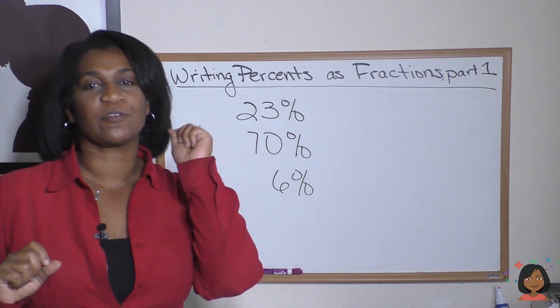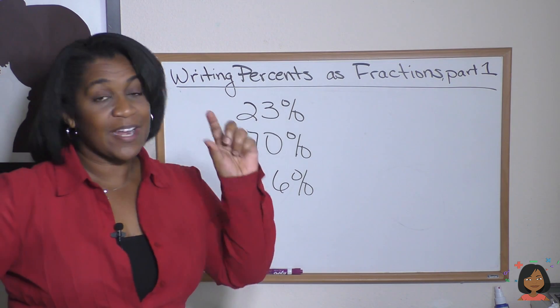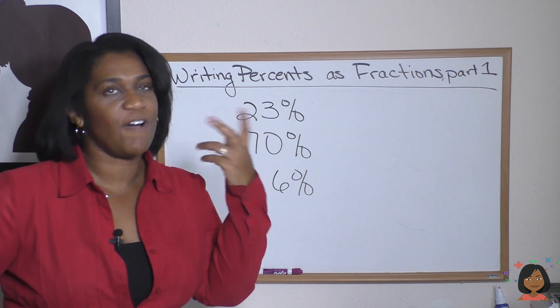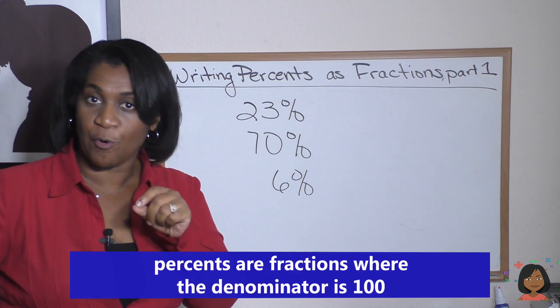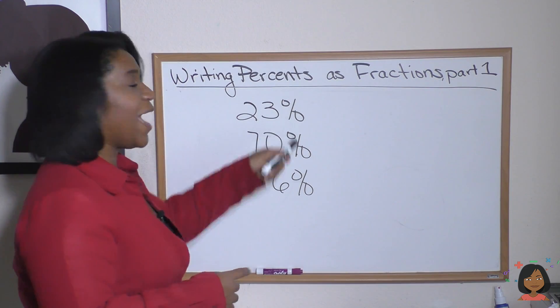The moment I say percent, you should always think percent is really just a fraction. It's that number over 100. If I said 5%, it's that number over 100. The denominator is always 100.